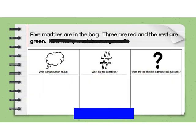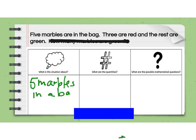So I would write my equation: two bunnies plus three more bunnies hopped onto the grass. Let's look at another one. Five marbles are in the bag. Three are red and the rest are green. What is the situation about? Well, the situation is we have five marbles in a bag and they're different colors.